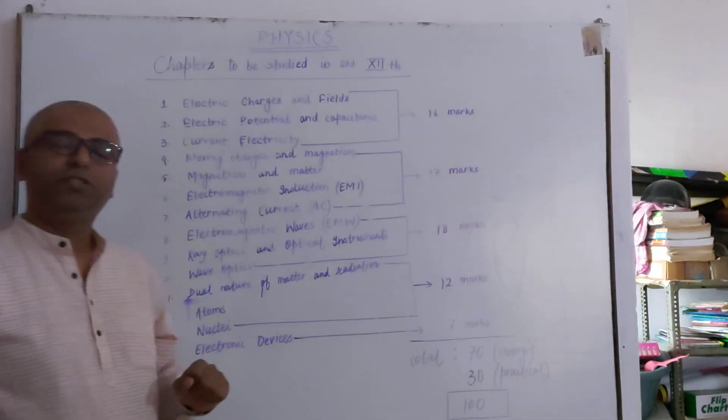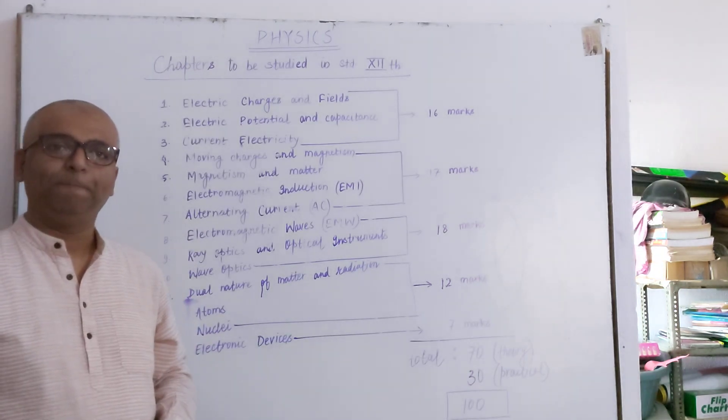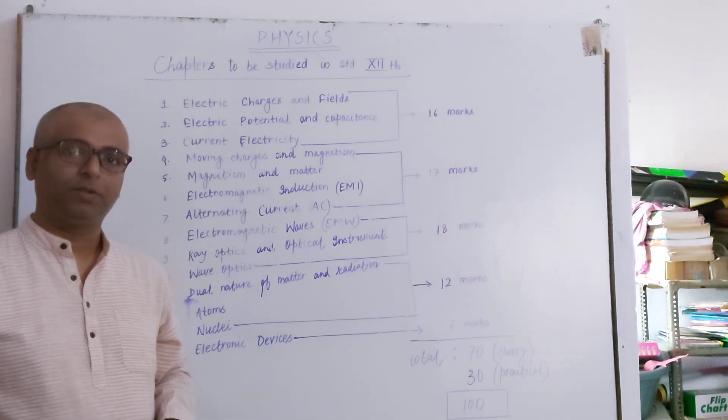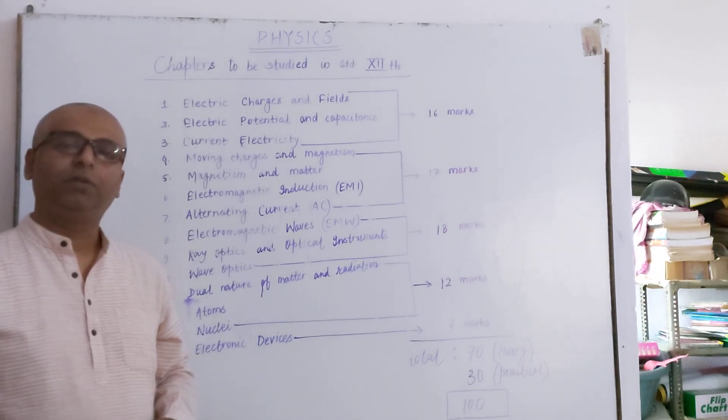Third chapter is Current Electricity. In Chapter 1 and Chapter 2, Electric Charges will remain at rest, whereas in Chapter 3, Electric Charges will be in motion.